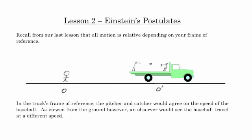In the truck's frame of reference, O', the pitcher and the catcher would both agree on the speed of the baseball. They're throwing a baseball back and forth and would say the pitcher is throwing it at 50 kilometers an hour. But the observer on the ground is seeing the pitcher throw the baseball on a moving truck, so he would say you're not throwing the baseball at 50 kilometers an hour — you're throwing it at 50 kilometers an hour plus how fast the truck is going.